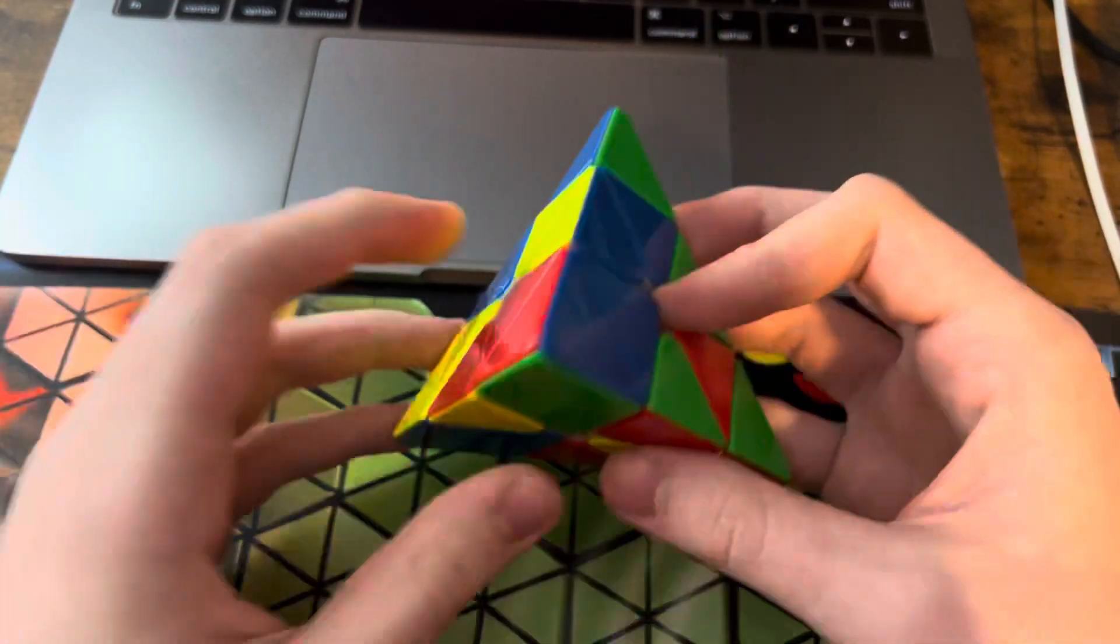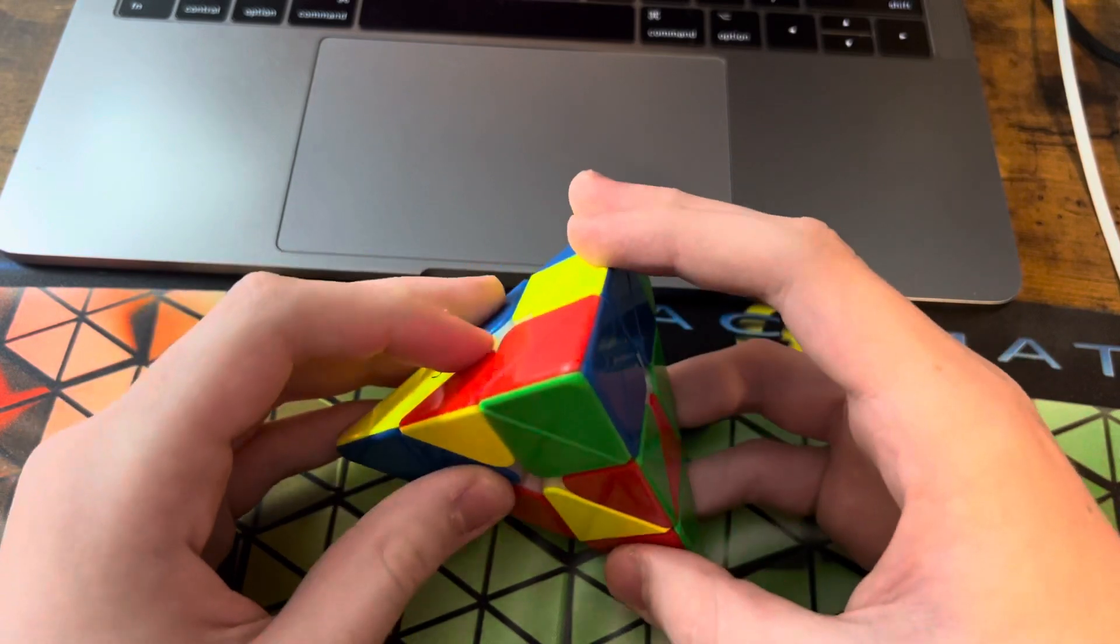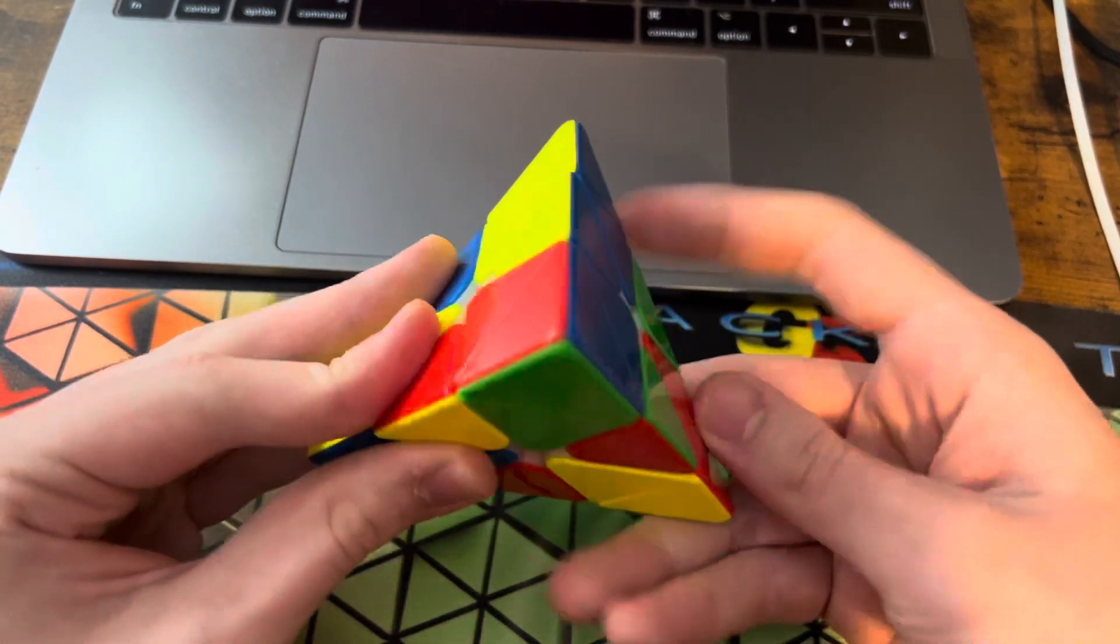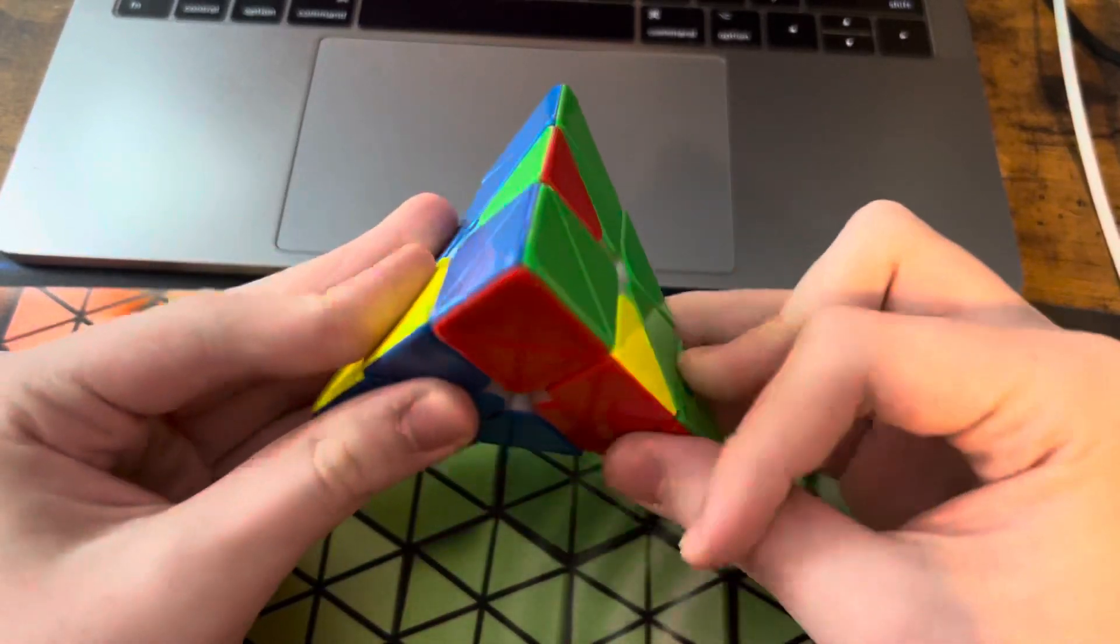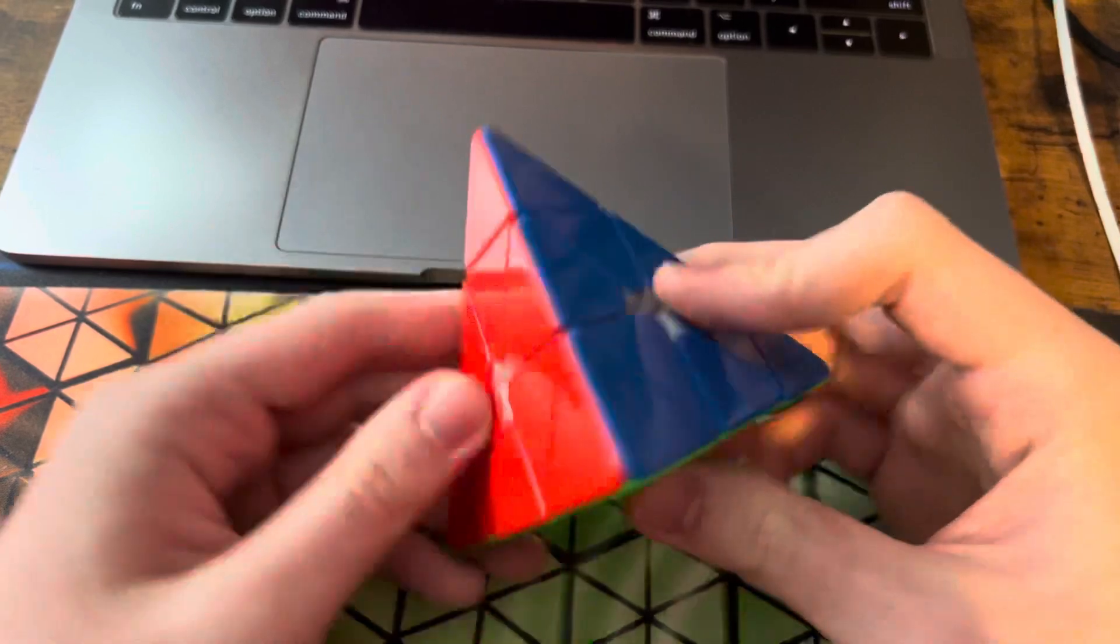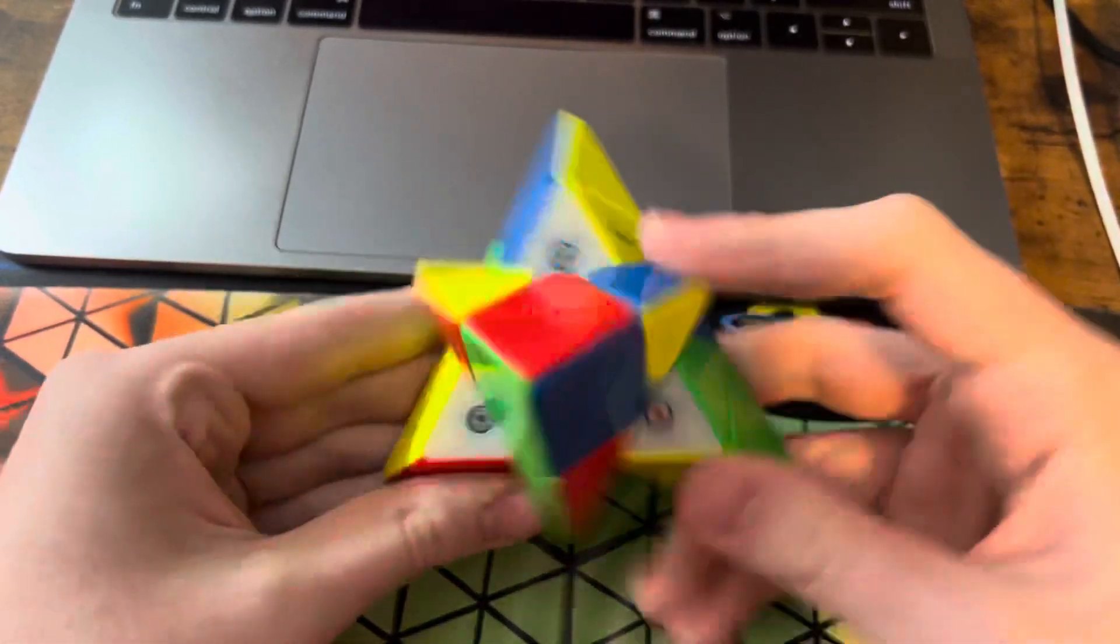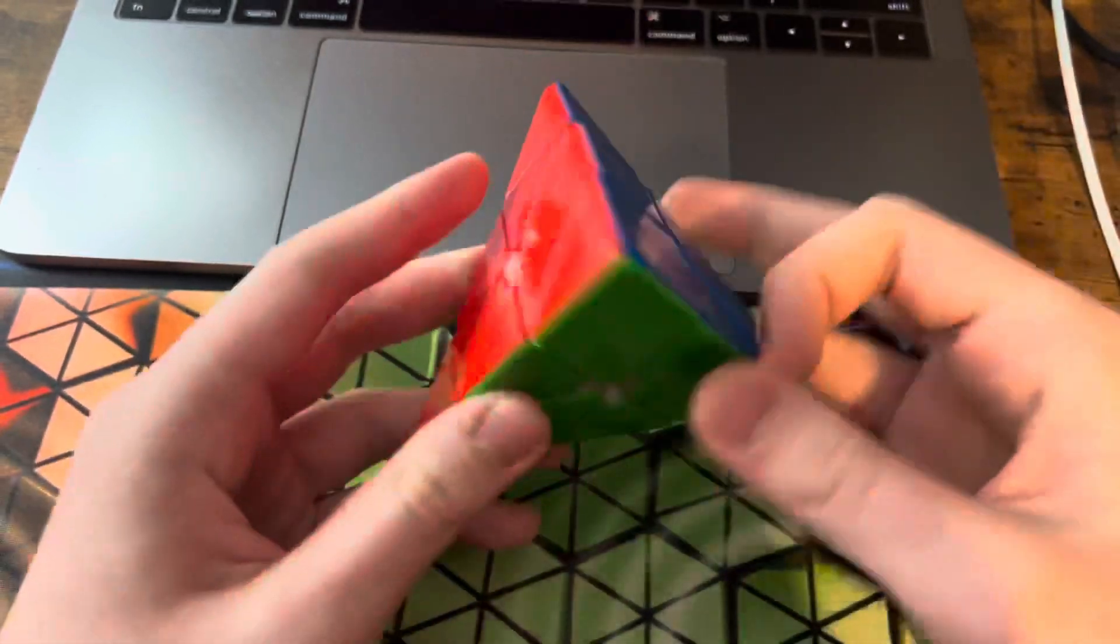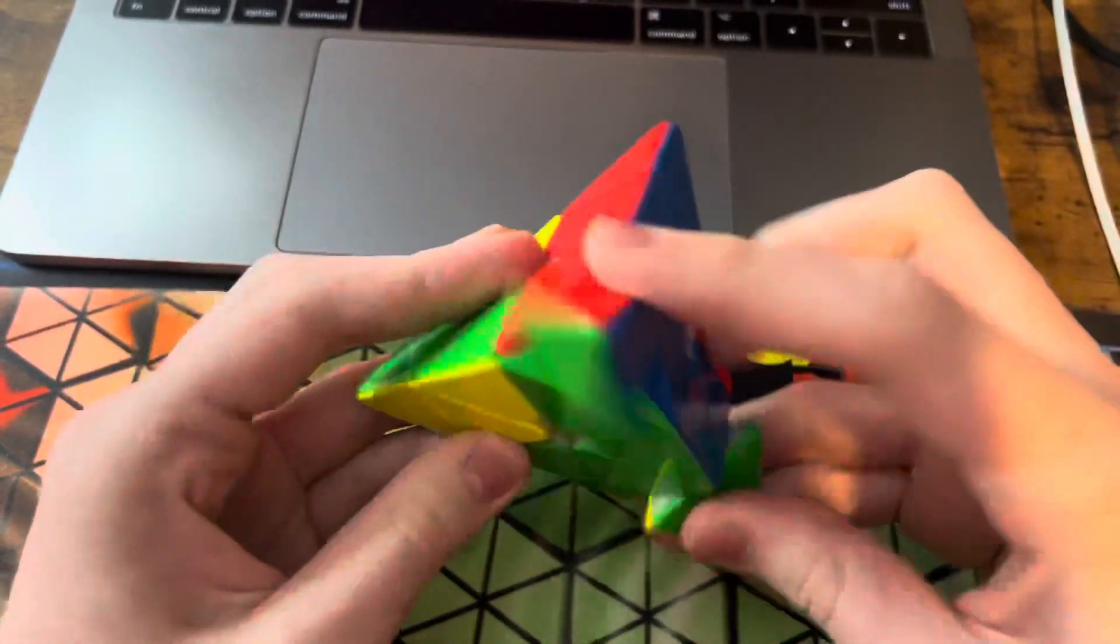Now, what I had seen from Harsha's reconstruction video is he did the yellow V like that. Which is actually a really, really good solution for that scramble. So I definitely didn't pick the best solution there.